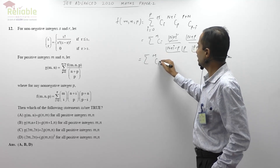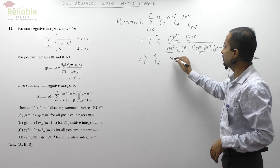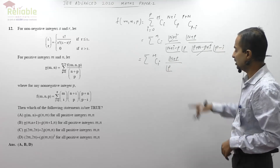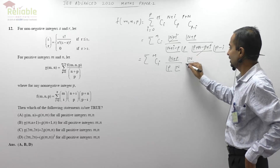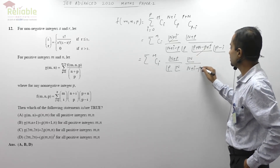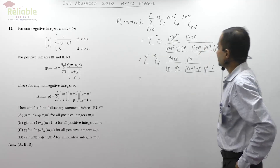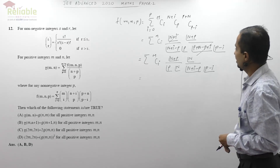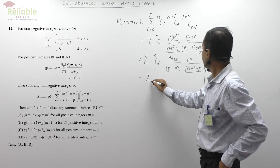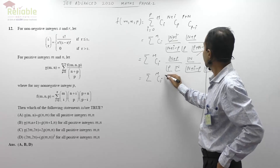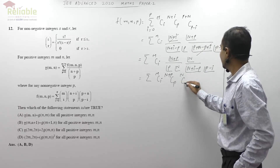We are left with mCi — I didn't expand this because nothing is getting cancelled there — and (n+p)! upon p!. This motivates us that we should have n! then n! times (n+i-p)! and (p-i)!. So what we get is summation mCi times (n+p)Cp times nC(n+i-p).